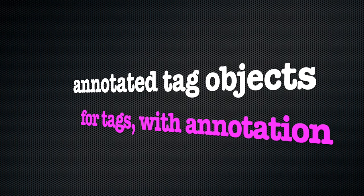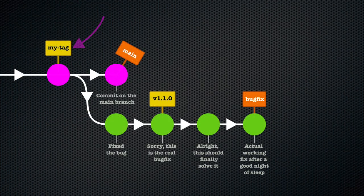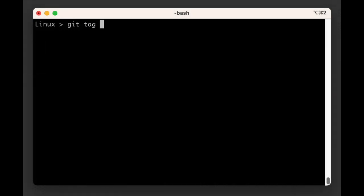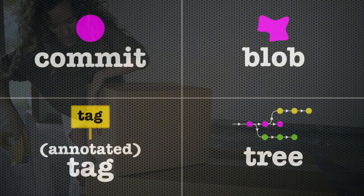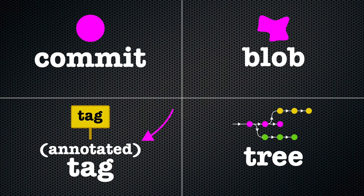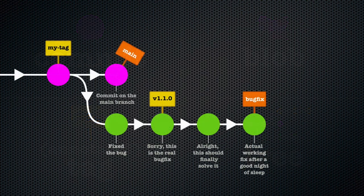The last type of object that Git uses is for annotated tags. We've seen how you can attach your own label to any commit in Git with the git tag command. What we didn't get into is that you can add more info to the tag, such as a message, or you can even cryptographically sign a tag. Git needs a place to store this additional information, and so there is an object type to specifically deal with this. However, the use of git tag that we demonstrated will only create the label and not create an object in Git.